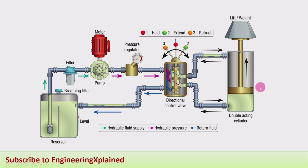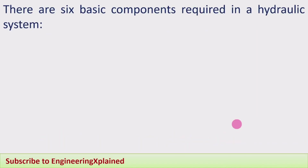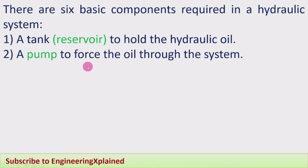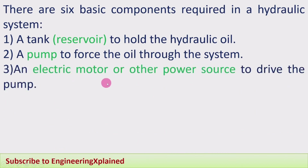These are the main components by which the hydraulic system works. The six basic components are: first, a tank or reservoir to hold the hydraulic oil; second, a pump to force oil through the system; third, an electric motor or other power source — such as an internal combustion engine — to drive the pump.